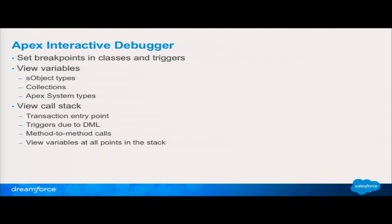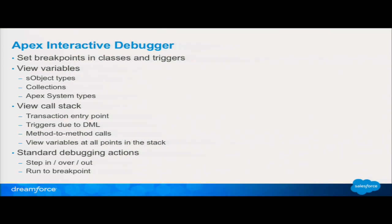You'll see the call stack. The call stack tells you where your transaction began, tells you all the triggers that you've hit based on the DML you've done, where you've gone from each method into each method, so you can figure out how far deep in the stack you are. And you can go back up and down the stack and view variables at any point. All the standard actions you expect to see: stepping in, running to your breakpoint. And last but not least, the debug output is being written to the console so that you can still put signposts in — 'I'm entering this method and I added this' — that will all show up in the console for you.